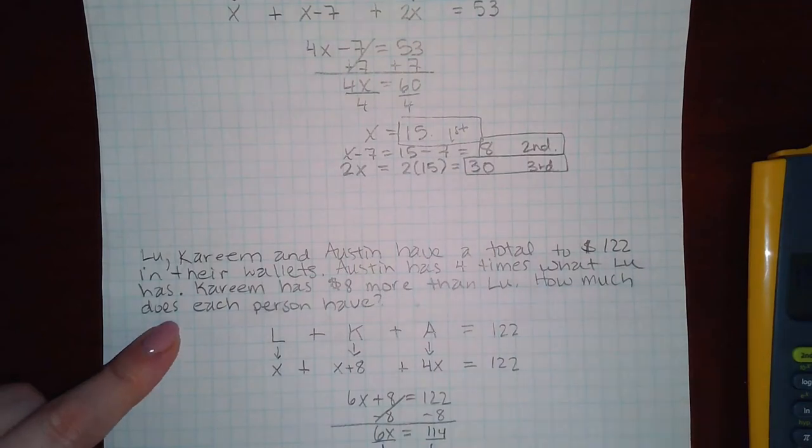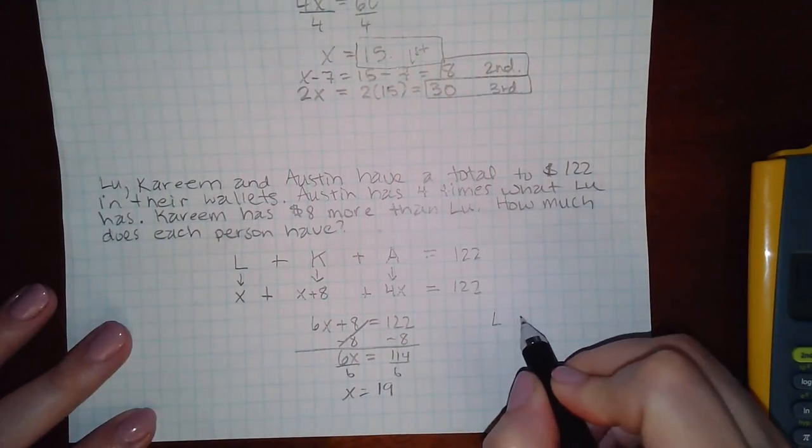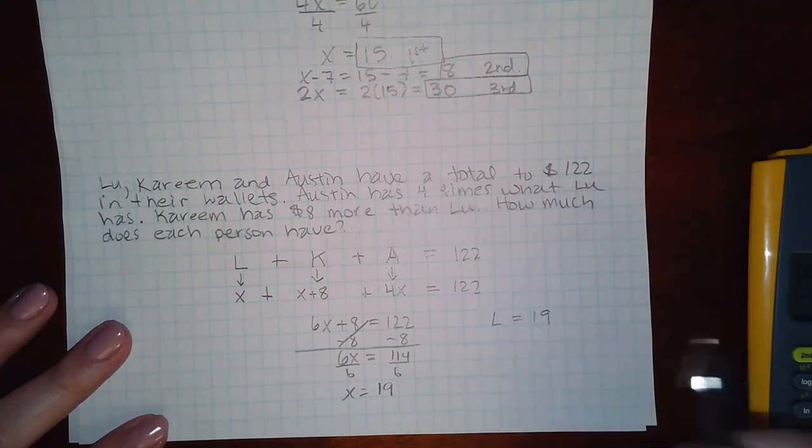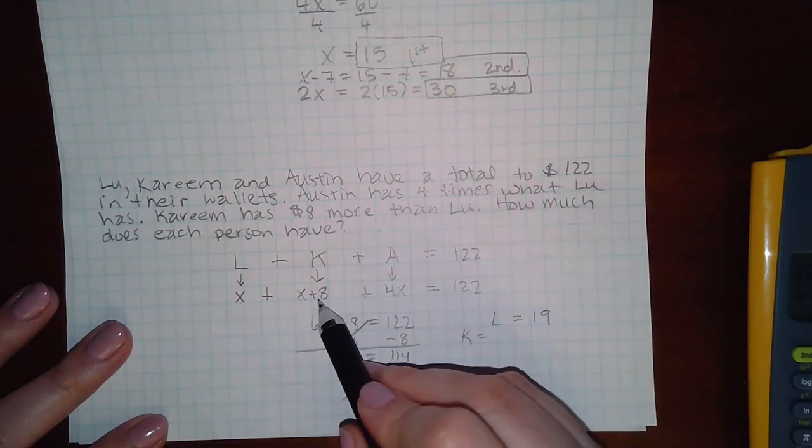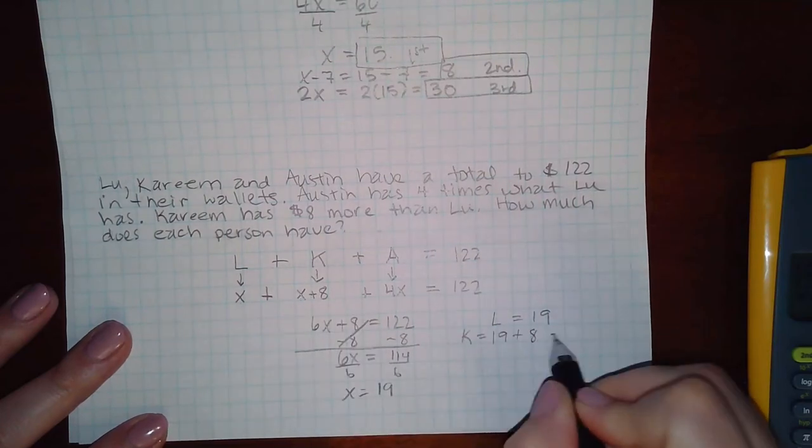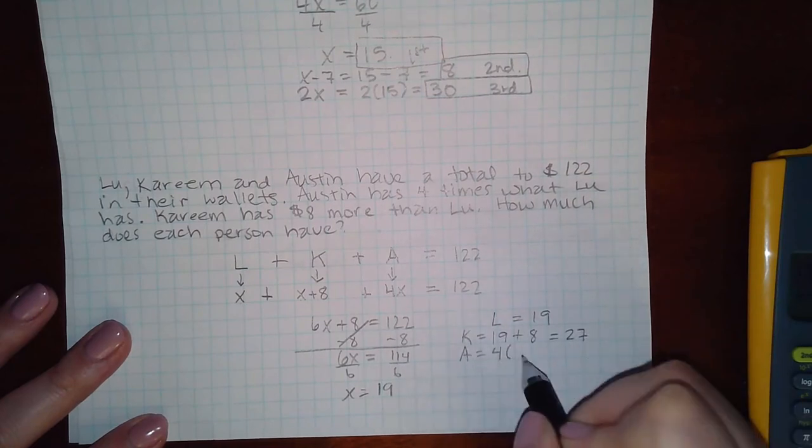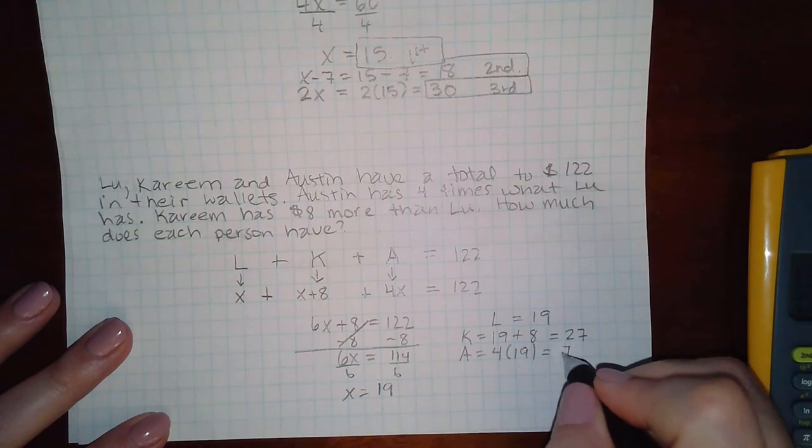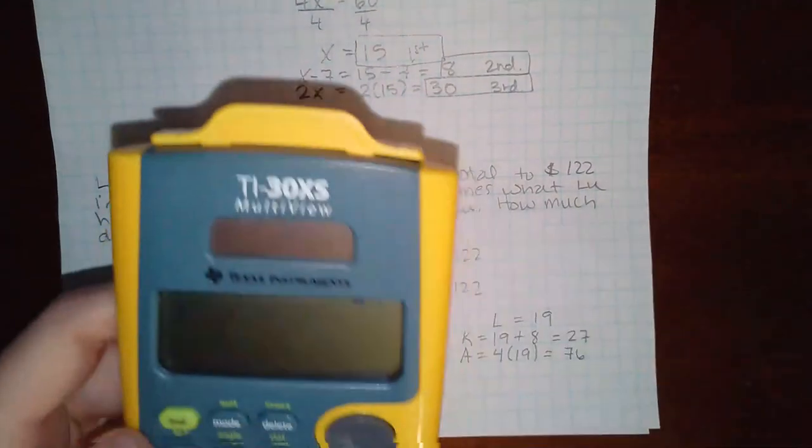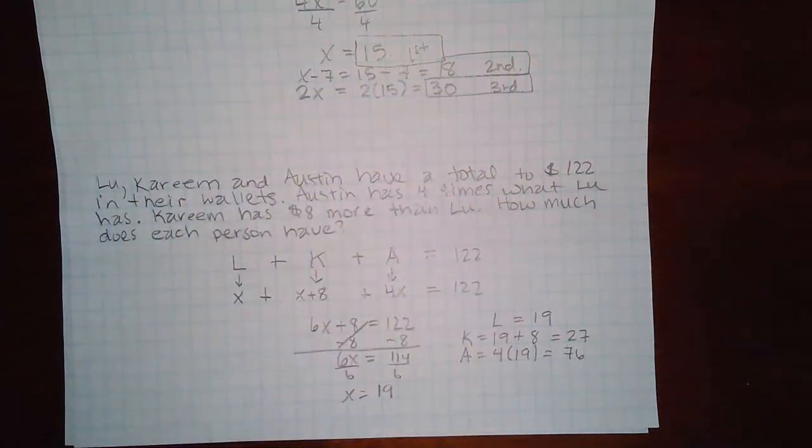Which means Lou has $19 because Lou equals just x by itself. Kareem has x plus eight, so 19 plus eight, which is 27. And then Austin has four times what Lou had, which is 76. And then again, if you want to double check, 19 plus 27 plus 76 does come out to be 122.